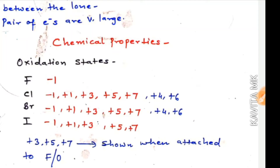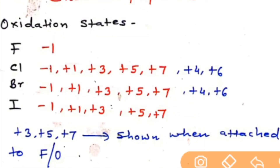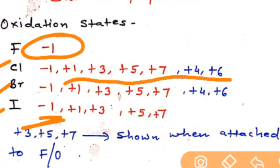Hello everyone. Today we are going to start with chemical properties of halogens. The first chemical property is oxidation states. All the halogens are going to show minus one oxidation state because they just need one electron to complete their octet. Apart from this, chlorine, bromine and iodine can also show positive oxidation states when they combine with more electronegative elements like fluorine and oxygen.